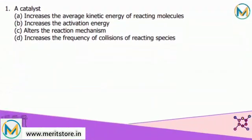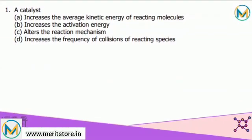First question: a catalyst - options are increases the average kinetic energy of reacting molecules, increases the activation energy, alters the reaction mechanism, and increases the frequency of collision of reacting species. Now since we know that a catalyst decreases the activation energy of a reaction so that more molecules are able to cross the activation energy barrier, the rate of the reaction is increased. Thus a catalyst can increase the rate of reaction and hence increases the frequency of collision of reacting species. So correct answer among the given options is D, that increases the frequency of collision of reacting species.